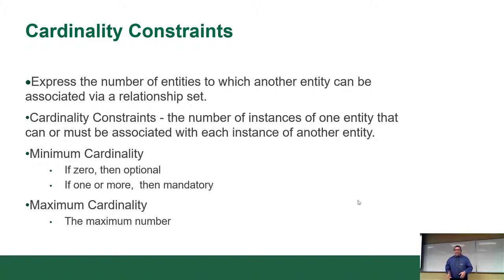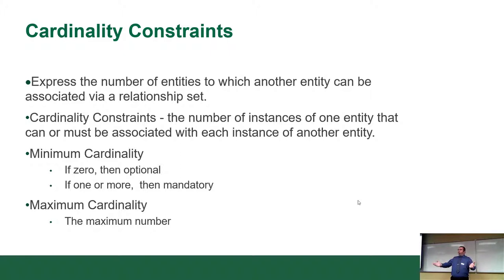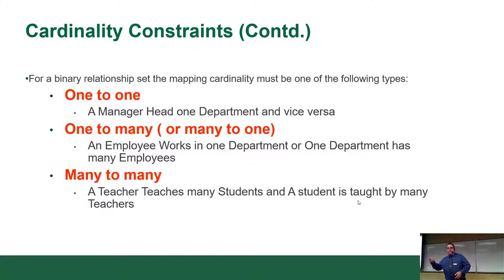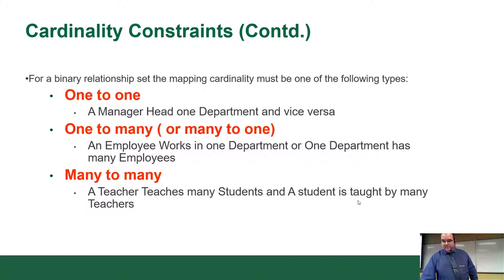I'm not going to cover the three kinds of relationships in detail because I covered them last week, but essentially you've got one-to-one, one-to-many, and many-to-many. A teacher teaches many students and a student is taught by many teachers — that's a many-to-many. We actually take that out and use a different kind of entity for that job.